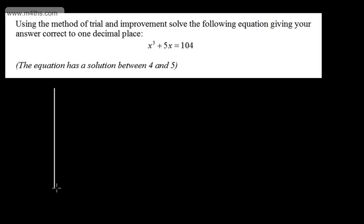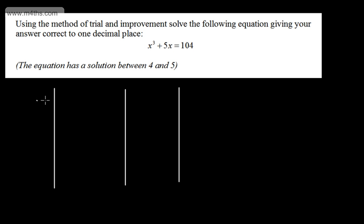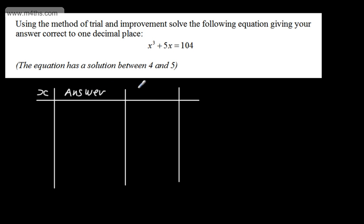What I'm going to do is build up a table. In my table, I'm going to have a value of x, the answer or value, and then a comment — three different columns. We're going to start with values of x, and the first one is going to be 4.